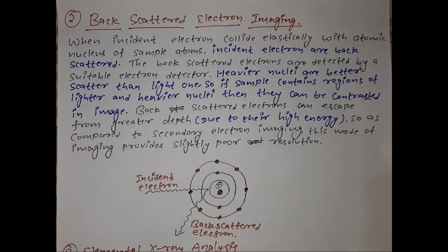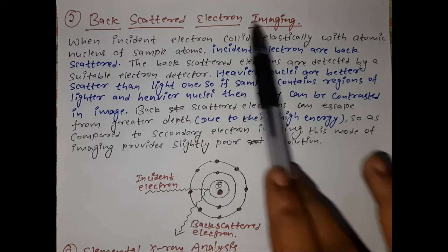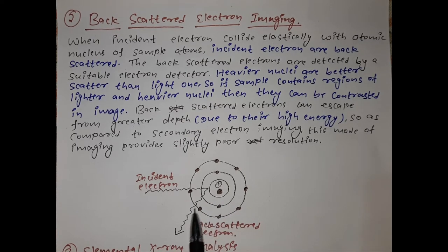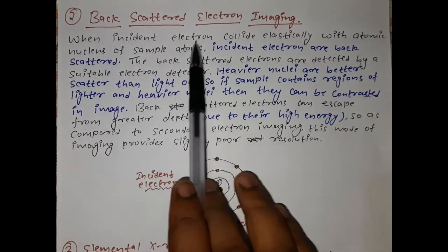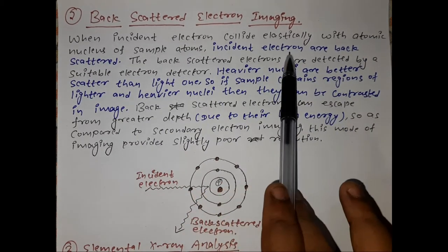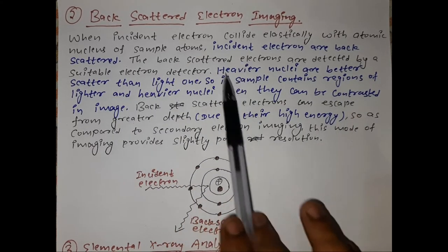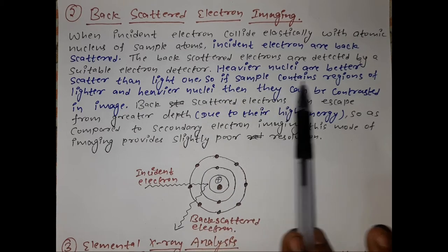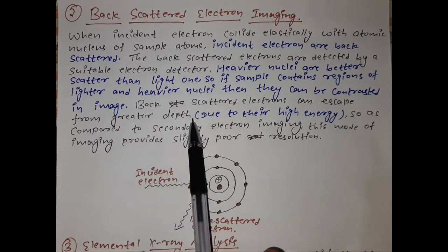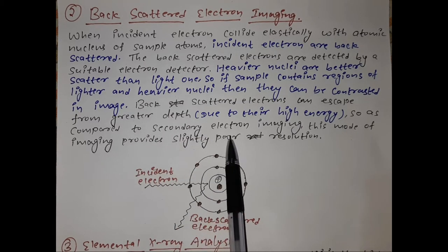The second imaging scheme is backscattered electron imaging. When an incident electron collides elastically with the atomic nucleus of a sample atom, it gets backscattered. These backscattered electrons are detected by a suitable electron detector. Heavier nuclei are better scatterers than lighter ones, so regions of lighter and heavier nuclei can be contrasted in the image. Backscattered electrons can escape from greater depth due to their high energy, so compared to secondary electron imaging, this mode provides slightly poorer resolution.